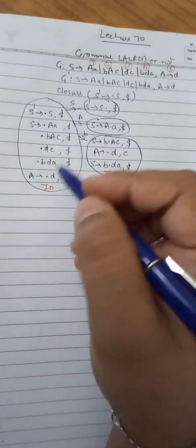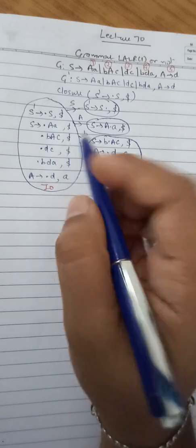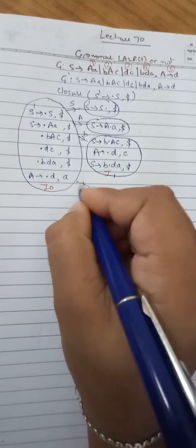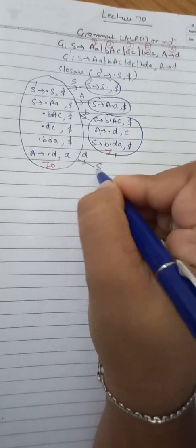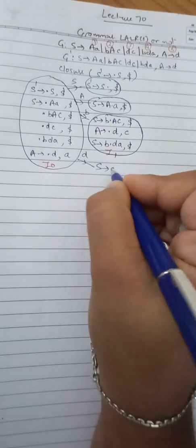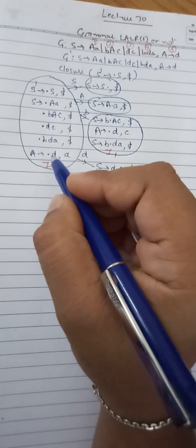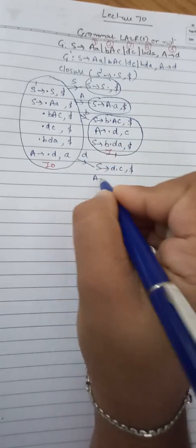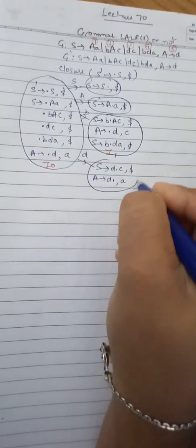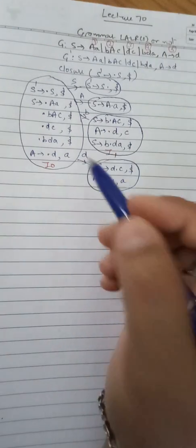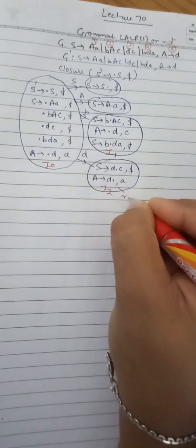Now we will see for terminal d. Over a, over b, only d is left. So for d terminal, what we get is S → d•C, comma dollar, and A → d•, comma a. This is I2. Now what we are seeing here: in I0 there is no problem, at I1 there is no problem because all are shifts only. But at I2 we can see there is shift and reduce both. The fifth production is completed here, so this is simply R5.